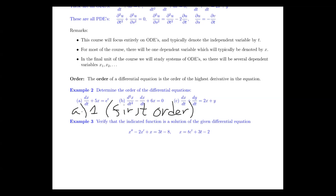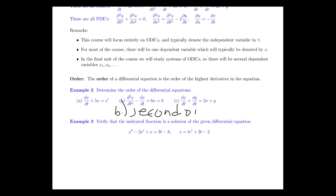For example B, we have the second derivative of x with respect to t minus the first derivative of x with respect to t plus 6x equals zero, so B is second order. And C is first order again, because the highest derivative present among the dependent variables is the first derivative.